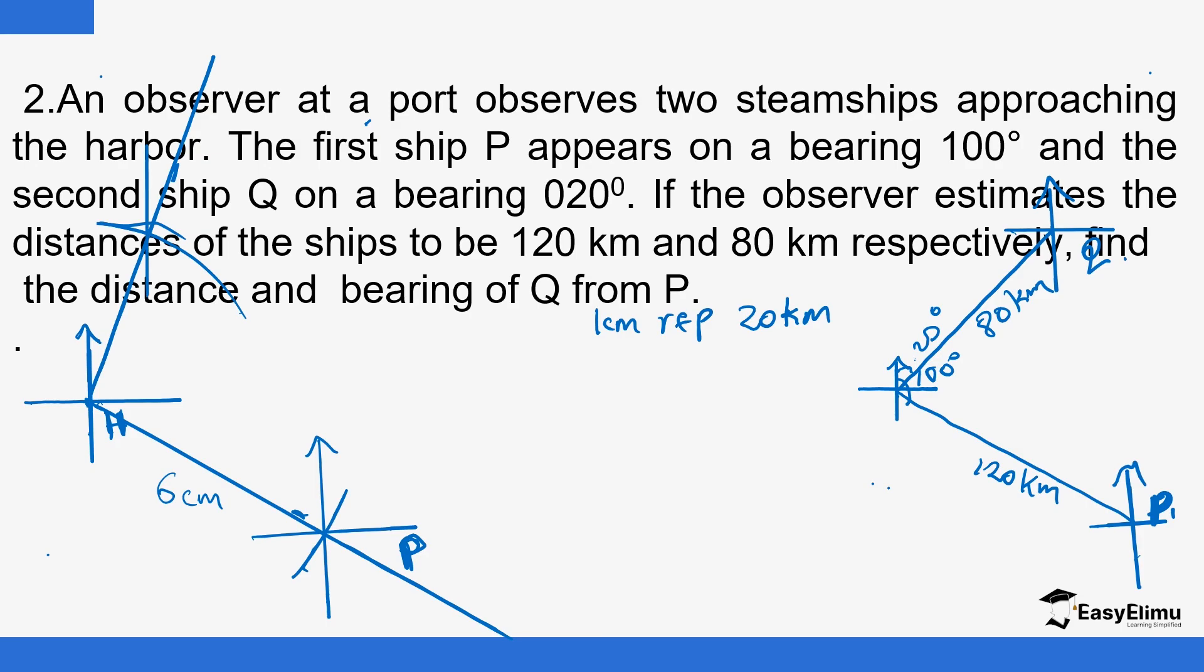So we divide by 20, so using H as the center and a radius of four centimeters, draw an arc to cut the line. So you draw that. Then now to find the bearing, so those are the exact positions. So Q is here and P is here. Now to find the exact positions, to find the distance and bearing of Q from P, you join the two points using a straight line that way.